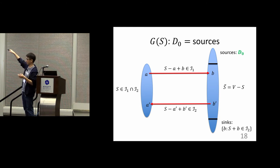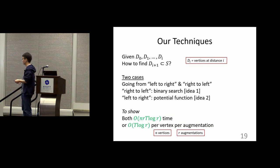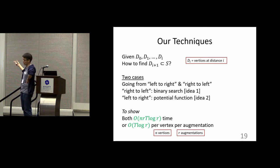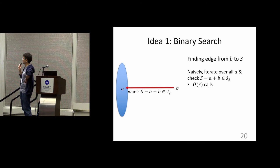To perform BFS you alternate left-to-right and right-to-left steps in the bipartite graph, and we want to do this efficiently without enumerating all edges. Initially the sources are simply D_0 by definition. Given all distance sets up to D_i, how do you compute the next one? There are two cases depending on direction, and we have two different techniques. For going right-to-left we use a binary search trick; for going left-to-right we use a potential function argument for amortized analysis. Both run in roughly N·R total time.